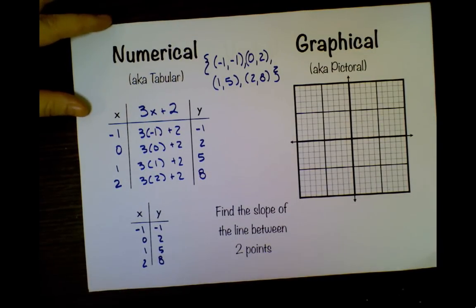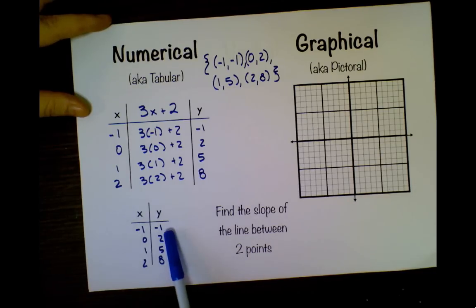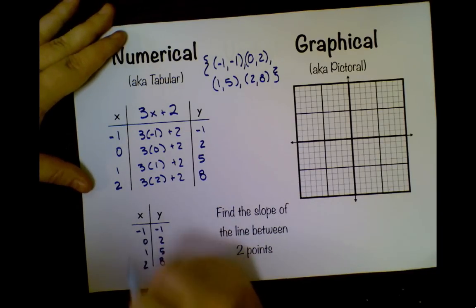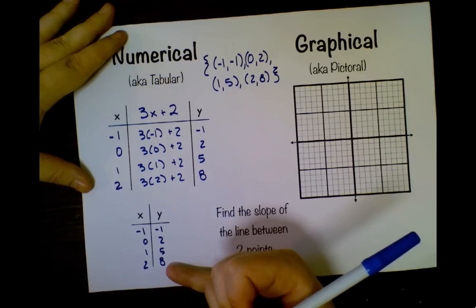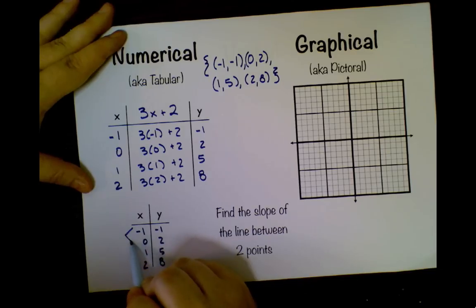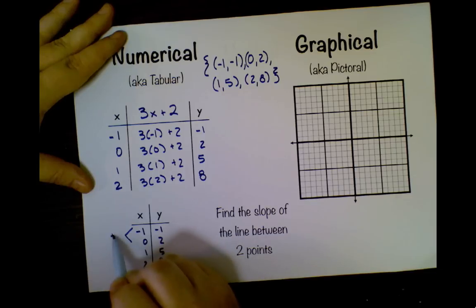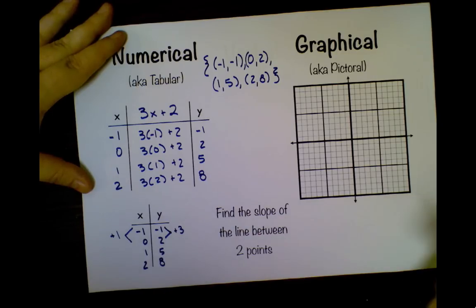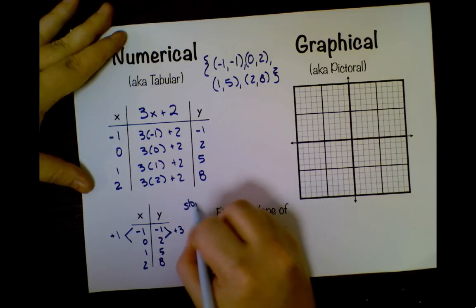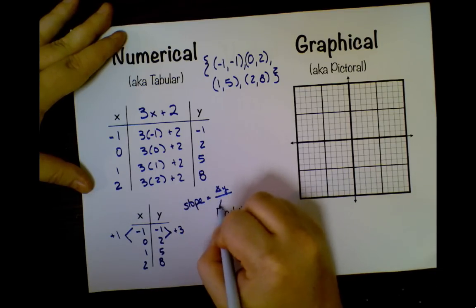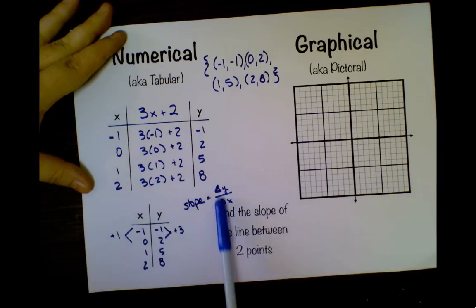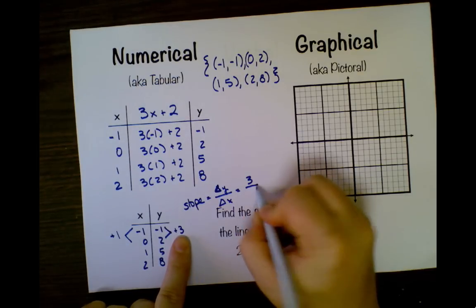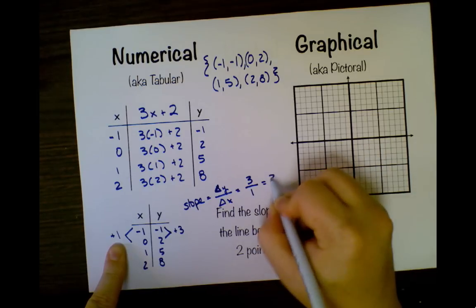Now if I wanted to find the slope of the line between two points, I would pick any two (x, y) pairs and I would find the difference. I think I'm just going to use two that are next to each other. You can pick any pair of points to find the distance between. To go from -1 to 0, I add 1. To go from -1 to 2, I add 3. Slope is the change in y over the change in x. That's supposed to be a triangle. That is the Greek symbol delta, which means change in. Here my change in y was 3, positive 3, and my change in x was 1. So I get a slope of 3.